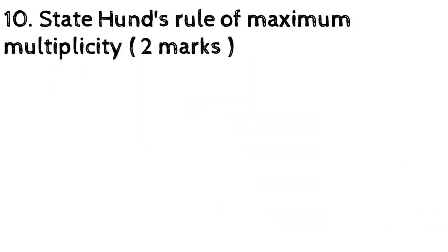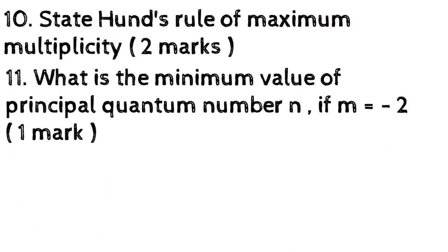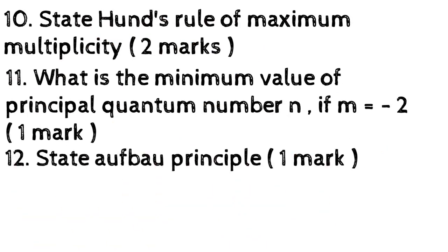Question 10: State Hund's rule of maximum multiplicity, 2 marks. Question 11: What is the minimum value of principal quantum number n, if m equals minus 2? 1 mark. Question 12: State Aufbau principle, 1 mark.